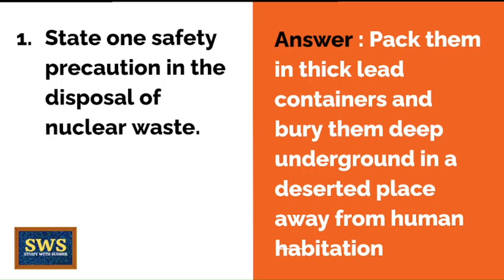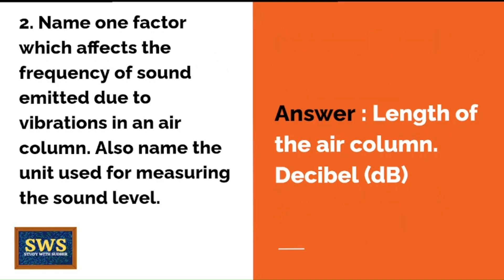Key words to mention: deserted place, underground, and away from human habitation. Thick lead containers is understood, but those other factors must also be mentioned. Next question: Name one factor which affects the frequency of sound emitted due to vibrations in an air column. Also name the unit used for measuring the sound level. The answer: the length of the air column; and the unit is decibel (dB).